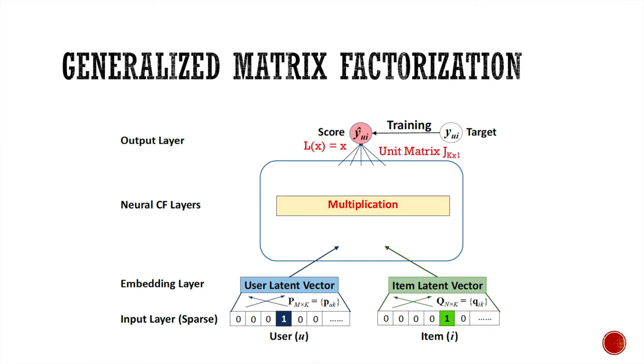You might wonder how matrix factorization is a special case of NCF. We replace the neural CF layers here with a multiplication layer, which performs element-wise product on its two inputs. And we also set the weights from the multiplication layer to the output layer to be a unit matrix of all ones with dimension k by 1. In addition, we set the activation function of the output layer to be a linear function.